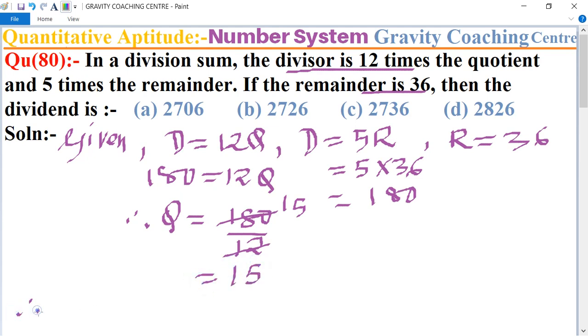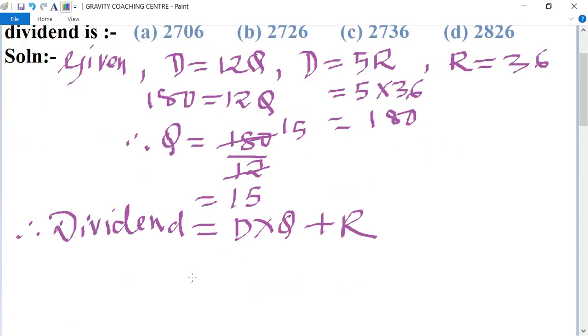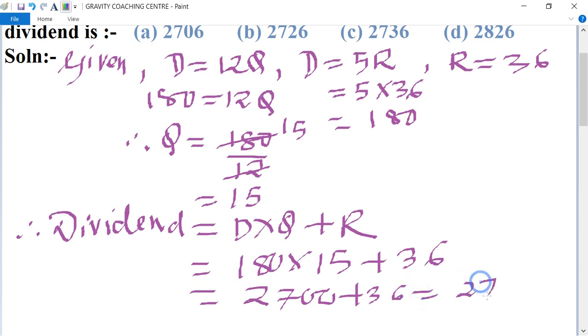So therefore, we know that the formula of dividend equals divisor into quotient plus remainder. So equals to, divisor is 180 and quotient is 15 and remainder is 36, equals 2700 plus 36 equals 2736.